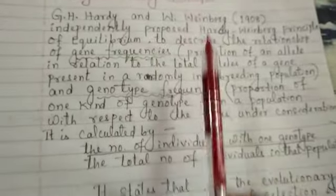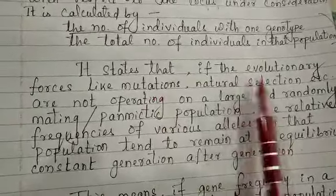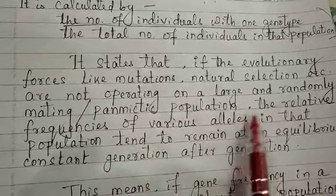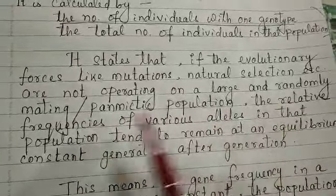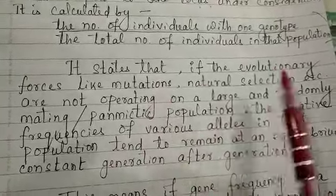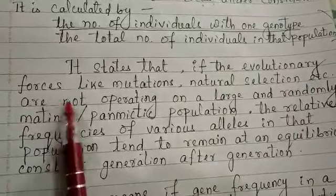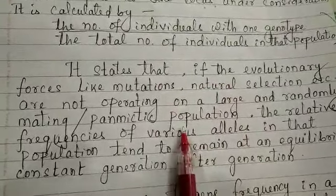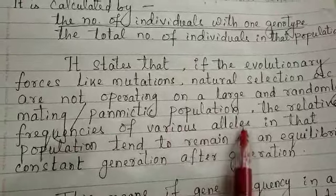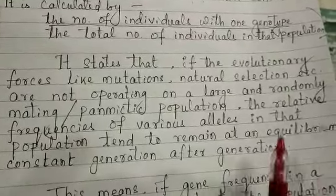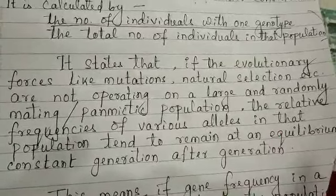According to Hardy and Weinberg's principle, if evolutionary forces like mutation and natural selection are not operating on a large and randomly mating panmictic population, then the relative frequencies of the various alleles in that population tend to remain at an equilibrium or constant generation after generation.